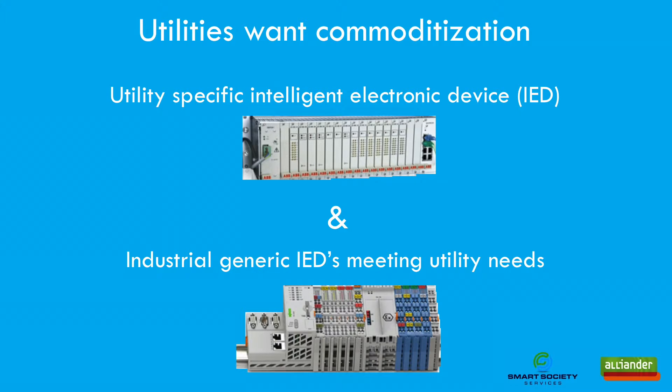Through market developments and innovations, everything that starts as state-of-the-art technology evolves into a commodity. One example is computing power. In the early days, computers were built for industrial use only. Over the years, the computer became a commodity product as it became possible to buy a personal computer as a commercial off-the-shelf product. Today, computing power is available as a commodity service in the cloud — you no longer need high investments in hardware and data centres. It's just one click away and available on the internet.